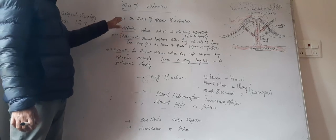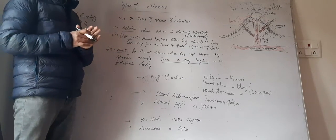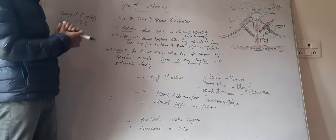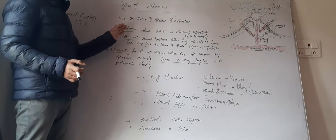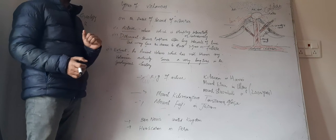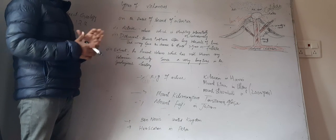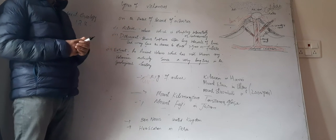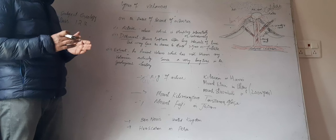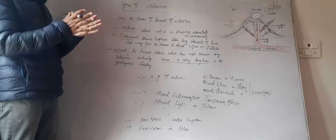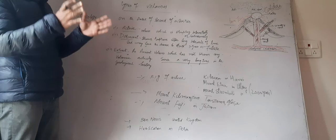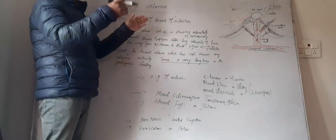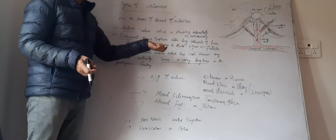So if we simply say, what are these three, how we can define them or we can easily differentiate them—just by meaning itself. Active means continuously, like eruption, flow, erupting.